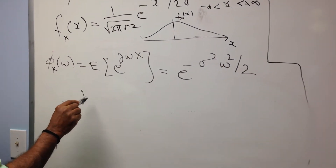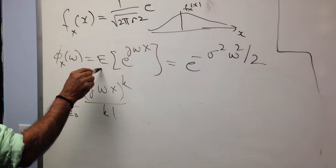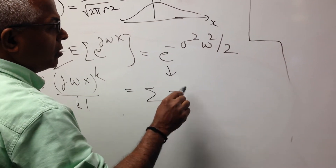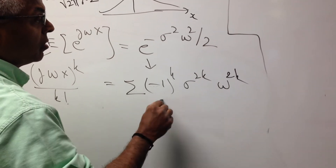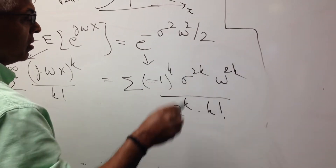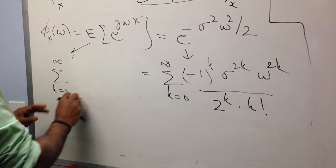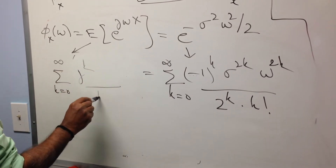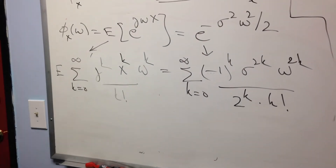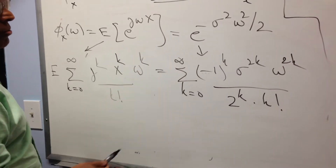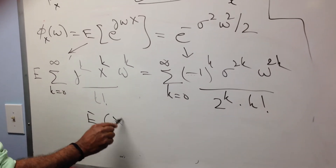Let me expand both sides. The left side expands as the sum over k from 0 to infinity of j to the power k times the expected value of X to the power k, times omega to the power k over k factorial. The right side expands as the sum of minus 1 to the power k times sigma to the power 2k times omega to the power 2k, over 2 to the power k times k factorial. Notice that the left side has all powers of k, while the right side has only even powers. So the first conclusion is that all odd-order moments of X are zero.